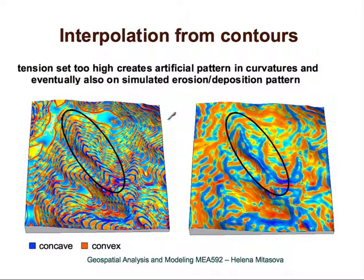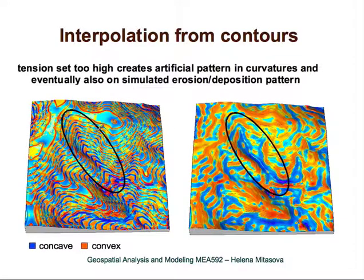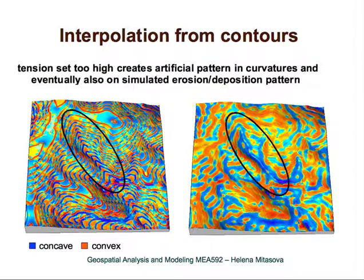The geometry of the resulting surface can have serious consequences for modeling results. If tension is set too high when interpolating from contours, you get convex and concave areas — essentially waves along the surface that exactly match the location of contours — which is an artifact. Because erosion and deposition patterns depend on surface shape, you will also get artificial patterns and wrong predictions. You can see a cascade of erosion and deposition in a valley happening at exactly one-meter steps. By tuning the tension, you can obtain a nice concave shape of the valley.